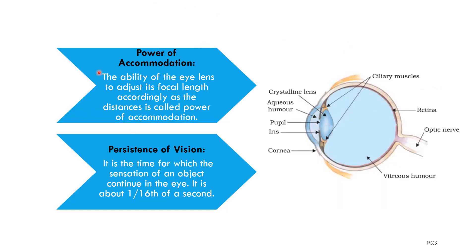Next is the power of accommodation. The ability of the eye lens to adjust its focal length according to the distance of an object is called the power of accommodation. Every eye has a certain limit of power of accommodation — it cannot see objects that are very near or very far. This property is called the power of accommodation.